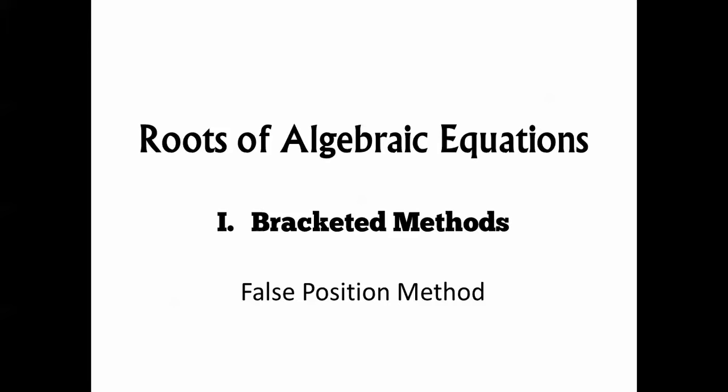Hello everybody. In this video we're going to continue the unbracketed methods for solving algebraic equations numerically. We're solving one equation in one unknown. Last time we used the bisection method, and this time we're going to discuss another method — a modification of bisection called the false position method.